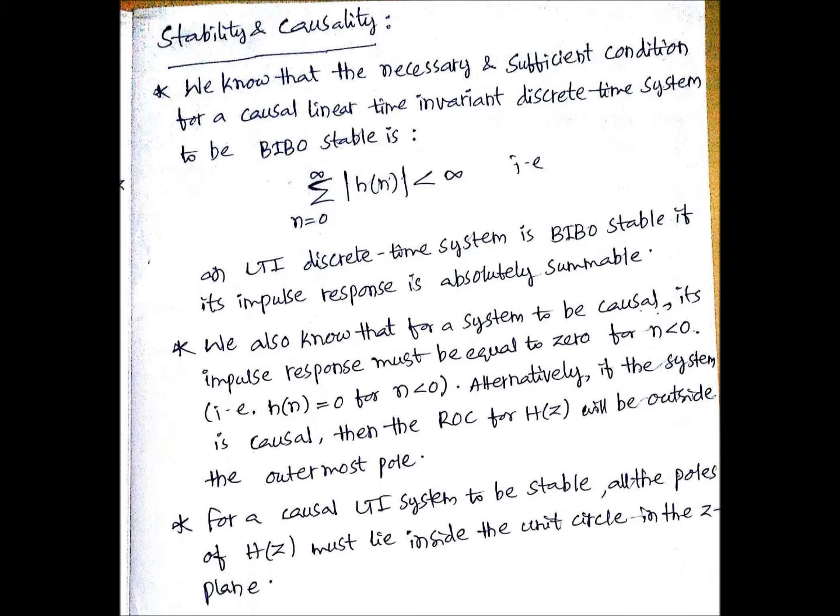When you are going to say a system is stable by using this poles condition, that is if h(z) is having all poles inside the unit circle and you want to say that system is stable, that system must also be a causal system.